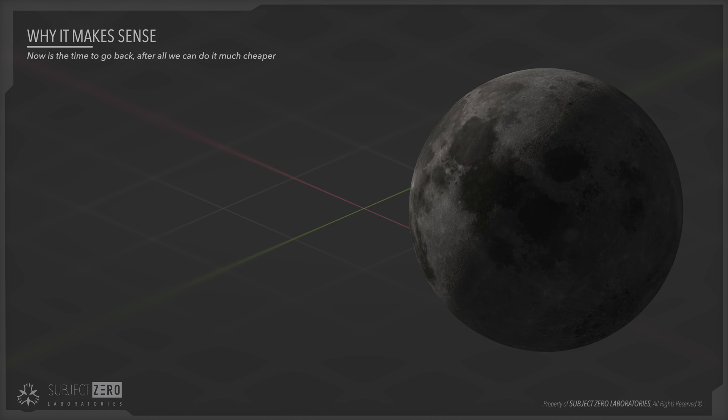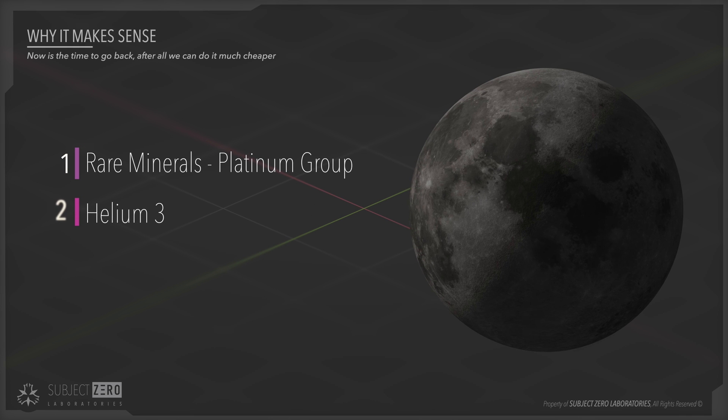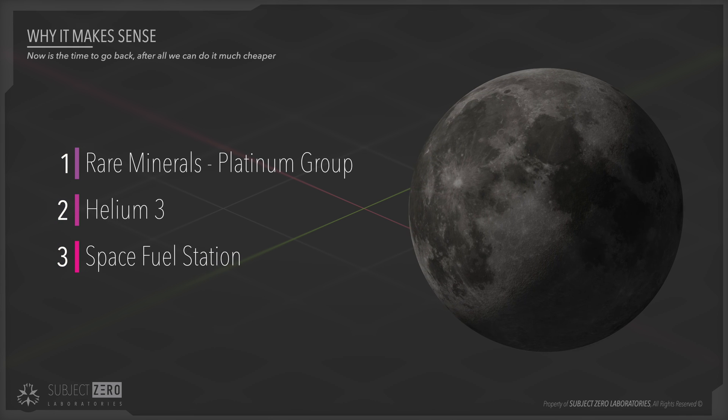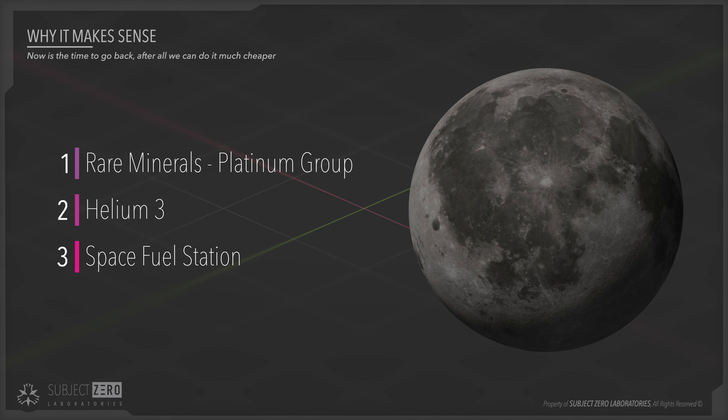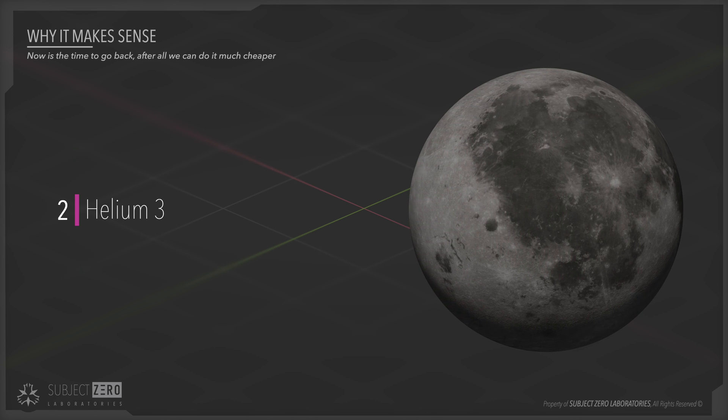It basically comes down to three main things: rare minerals, helium-3, and fuel station. You probably heard by now that helium-3 is available on the moon's surface and is a very sought after element for many reasons.